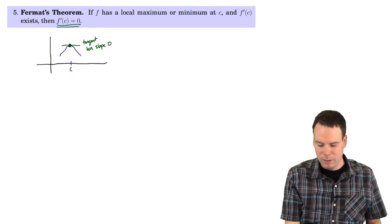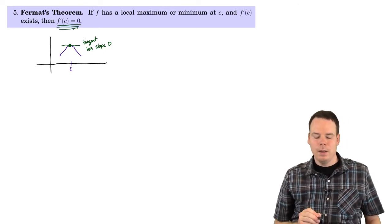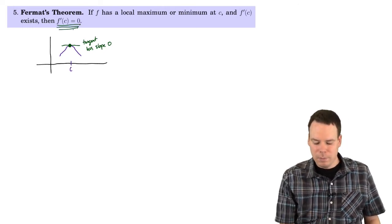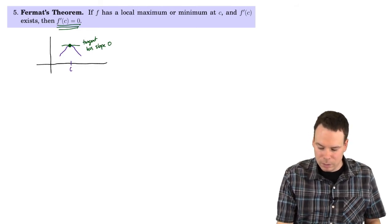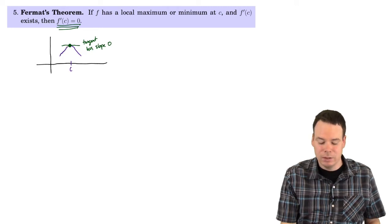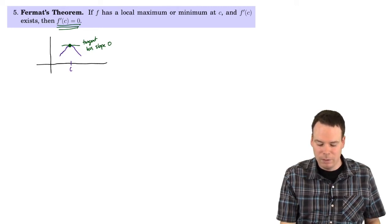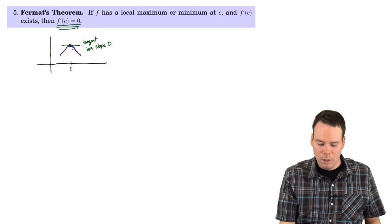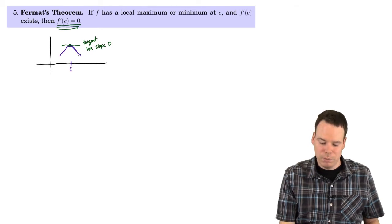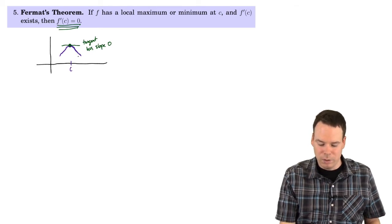In other words, the derivative at c should be 0. How can you turn around when you're climbing up? We're thinking about coming along this curve — you're climbing up, you hit this local max, and then you have to turn around and come back down. You can turn around smoothly, as shown here, or you can turn around by doing a sharp corner.